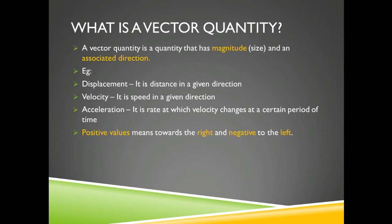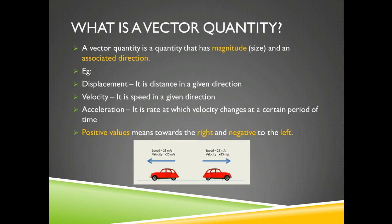Positive values means towards the right and negative means towards the left. This is quite important because in questions that use momentum or even velocity itself, they may be asking which two vehicles are travelling at the same velocity. They may give you the same speed, but the velocity would be different because they might be travelling in the opposite direction.